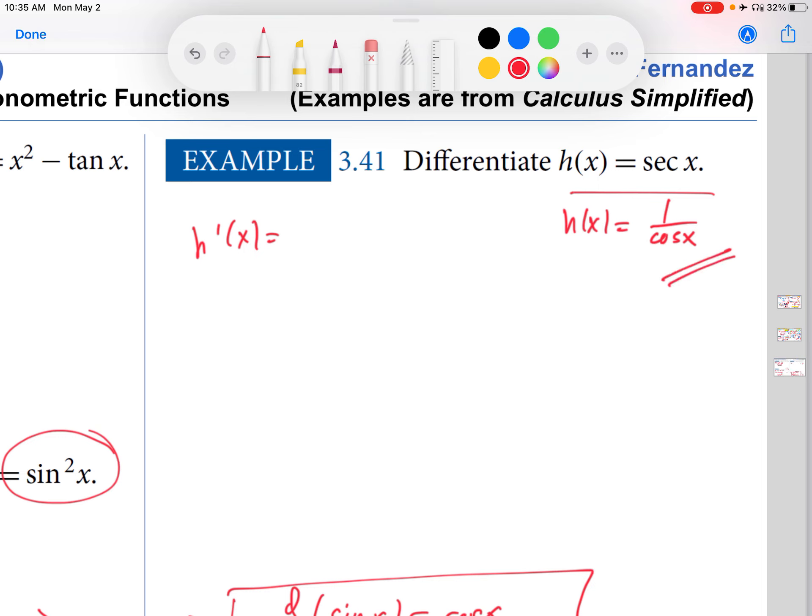So this is a quotient of two functions, technically speaking. I could do the quotient rule. But anytime you have 1 divided by a function, what I would do instead of the quotient rule is I would write it as the function to the negative 1 and then apply the chain rule.